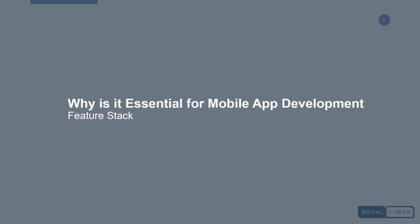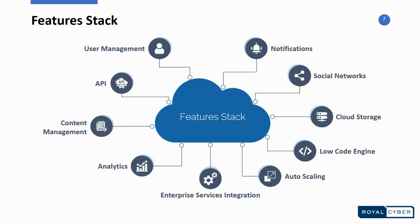Why is it essential for a mobile application to have Mobile Backend as a Service? Let's take a look at the feature stack. Mobile apps require a similar set of features on the back-end for most applications, and these include notification services, social network integrations, cloud storage, and many more. Each of these services has its own API, and that API should be individually incorporated into an app.